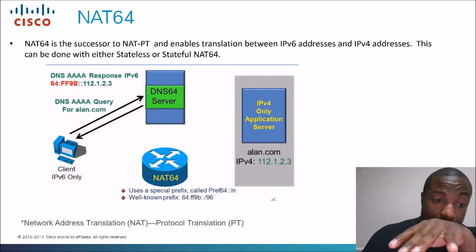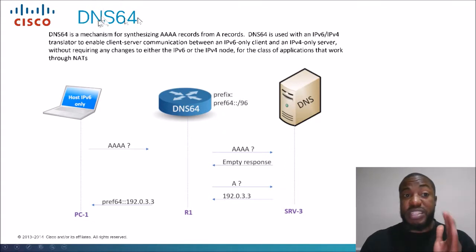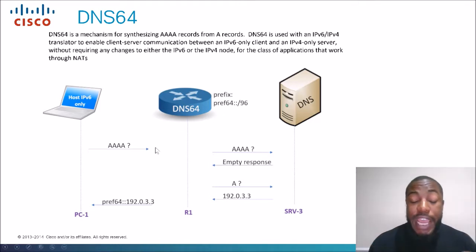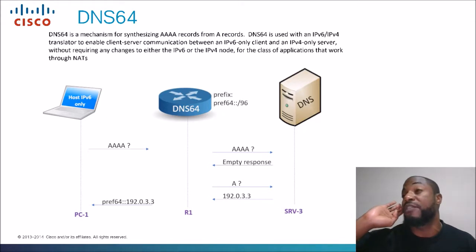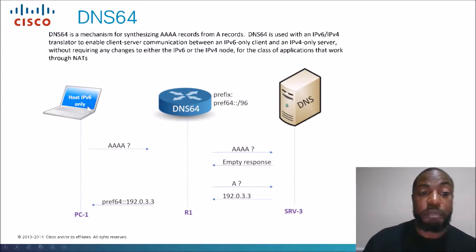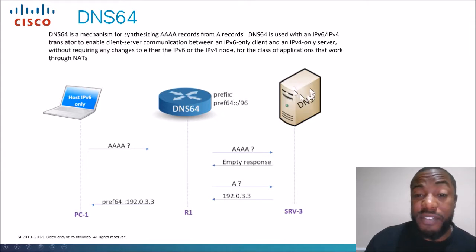When we query a DNS64 server, it doesn't just directly return an address. What really happens is the client queries for a quad-A record. A quad-A record is domain name mapping for an IPv6 host — AAAA is for IPv6. If you're querying an IPv4 host's domain name, you're asking for its single A record, not quad-A. So the client asks, 'What's the quad-A record for this website?' The IPv4 host responds that it doesn't have a quad-A record — it's an IPv4 host.